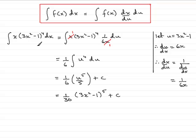And there you have it — the integral of x bracket 3x squared minus 1 to the power 4 is this answer. Now, you could have actually done this one by recognition, but sometimes people find it a bit awkward to do it that way. So you have this alternative method: integration by substitution.